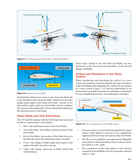Rotor Blade and Hub Definitions: the CFI must be familiar with the following basic terms. 1. Hub — the attachment point of the rotor blades. 2. Tip of the blade — the farthest outboard section of the rotor blade. 3. Root of the blade — the section closest to the hub where the attachment point is located. 4. Twist — the change in blade angle with respect to the angle at the hub outward to the tip. 5. Taper — the change (decrease) in blade chord with radial distance. These terms are best discussed in the classroom and identified on the aircraft during a pre-flight.